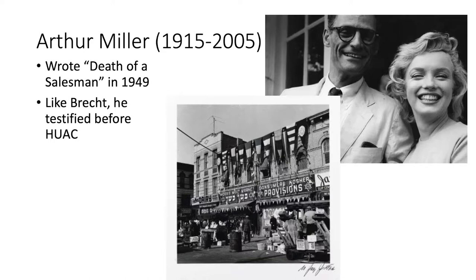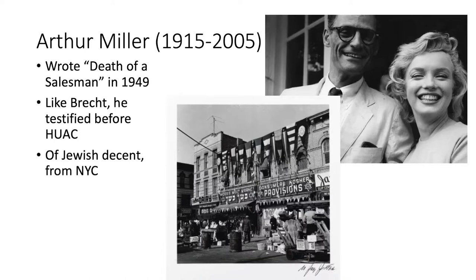Miller testified in front of the House of Un-American Activities Committee and was charged with being a communist, though nothing came of it. They took away his right to travel and suspended many things, but it was toward the end when McCarthyism was dying out. A lot of his bitterness toward America came partly from these infringements on his rights. He's also the son of immigrants, of Jewish descent, living in New York City — seeing immigrant optimism, and much of this play unpacks skepticism for that.